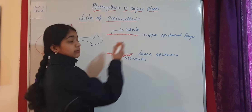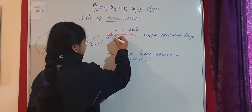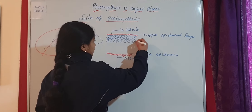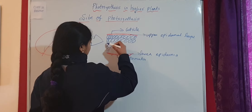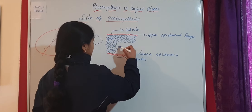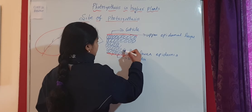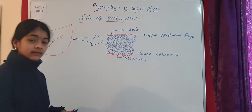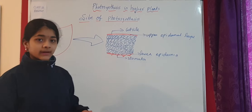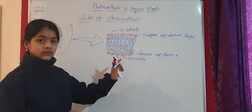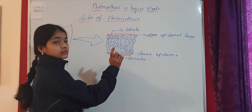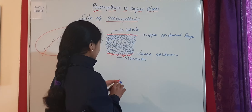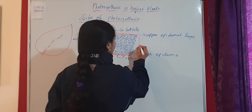The cells near the upper epidermis are tightly arranged, and as we move down, the cells become loosely arranged. The tightly arranged cells are called palisade parenchyma cells, and the loosely arranged cells are called spongy parenchyma cells. All are parenchyma cells, just arranged differently — tightly arranged are palisade parenchyma cells, loosely arranged are spongy parenchyma cells.